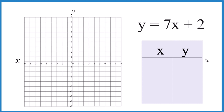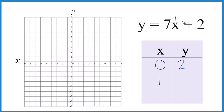So for our table of values, I always like to start out with 0, because if x is 0, 7 times 0, that's just 0. 0 plus 2, that's 2. Let's try 1. 7 times 1, that's 7, plus 2, that's 9.